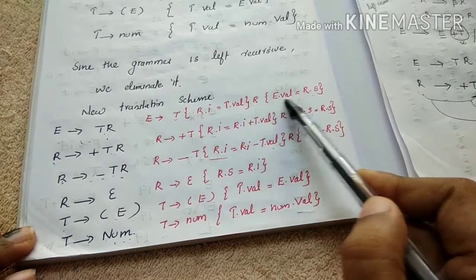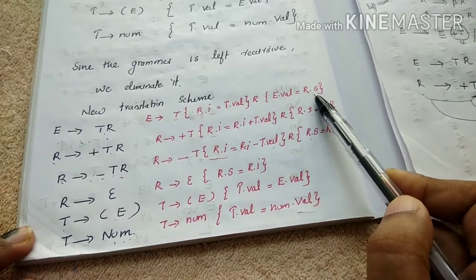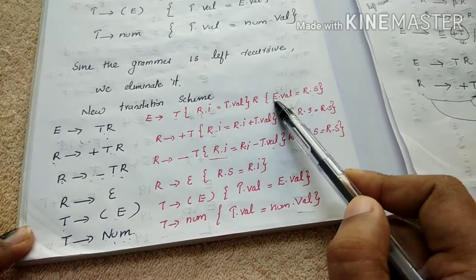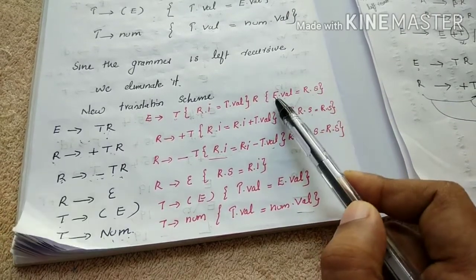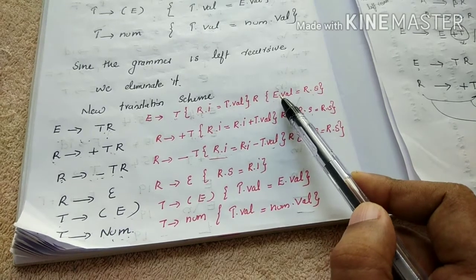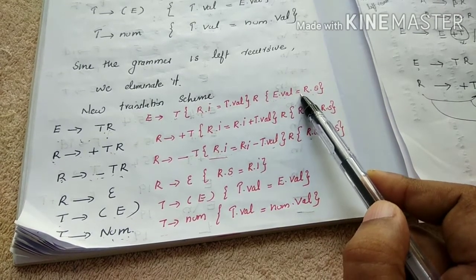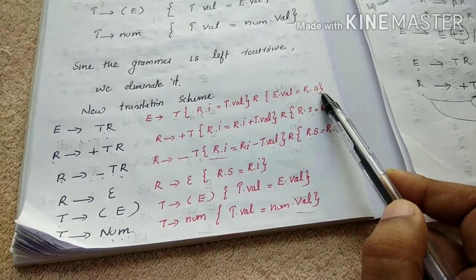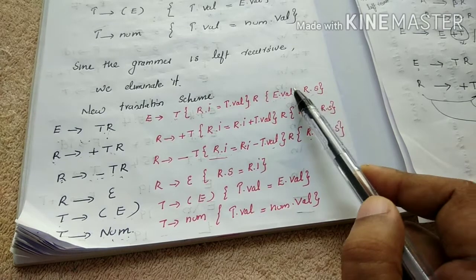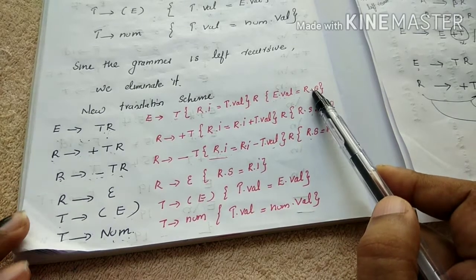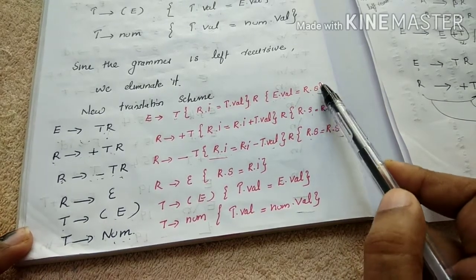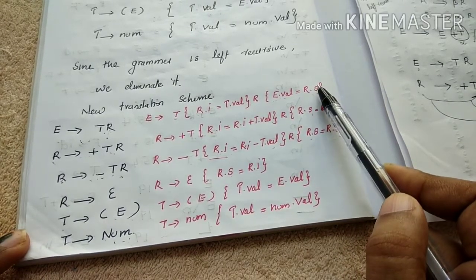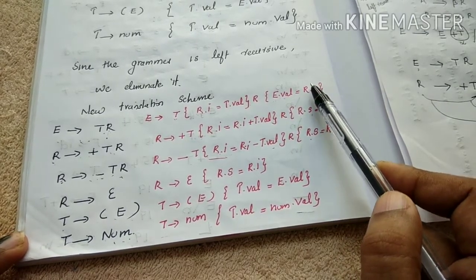R.I stands for Inherited. E.Val is for synthesized attribute, indicated as R.S. E.Val is the synthesized attribute here.